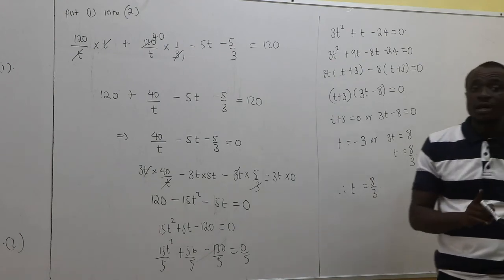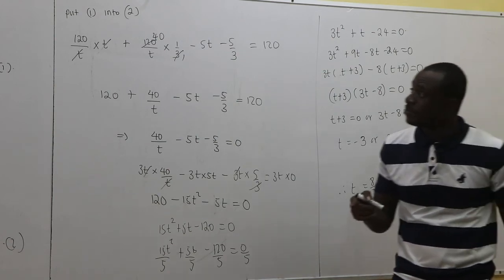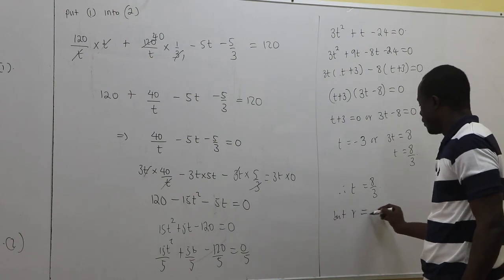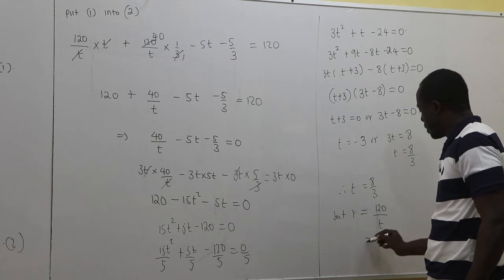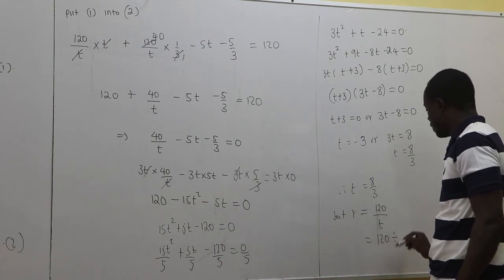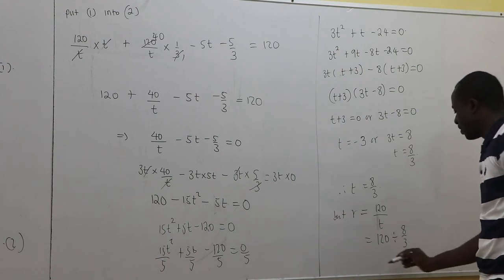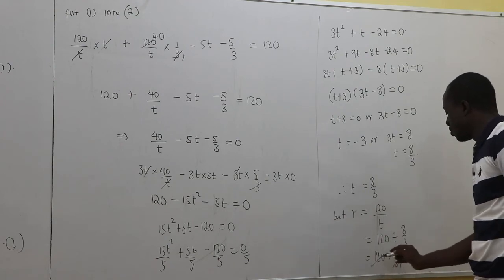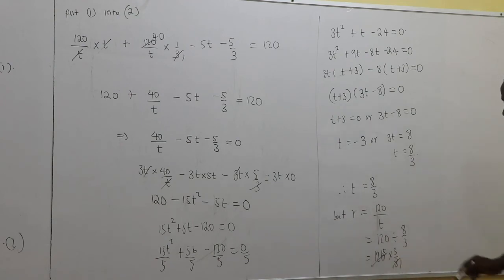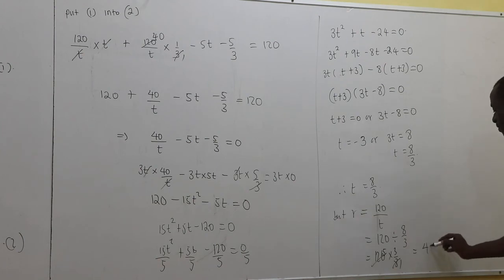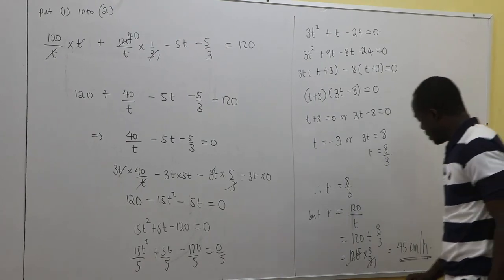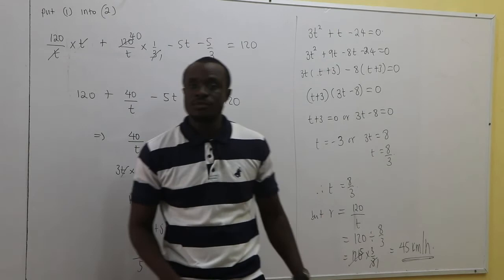Now we find the average speed R. R = 120/T = 120 ÷ (8/3) = 120 × (3/8) = 15 × 3 = 45 kilometers per hour. So the average speed is 45 kilometers per hour.